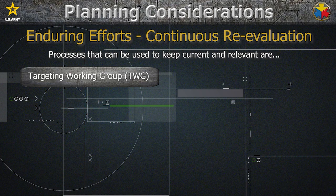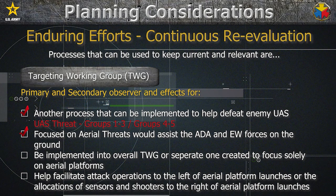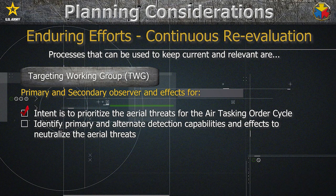Next is the Targeting Working Group, another process that can be implemented to help defeat enemy UASs. Units normally focus on ground enemy systems, but conducting an aerial targeting working group would assist ADA and EW forces. This can either be implemented into their overall targeting working group, or a separate one can be created to focus solely on aerial platforms. This process can help facilitate attack operations to the left of aerial platform launches, or the allocation of sensors and shooters to the right of aerial platform launches. The intent is to prioritize aerial threats for the air-tasking order cycle, then identify primary detection capabilities and effects to neutralize aerial threats.